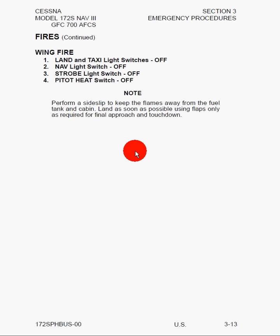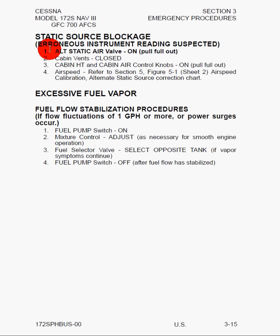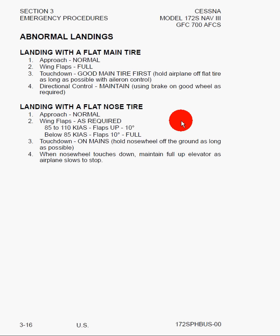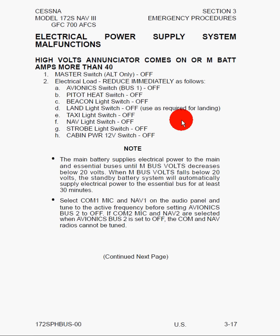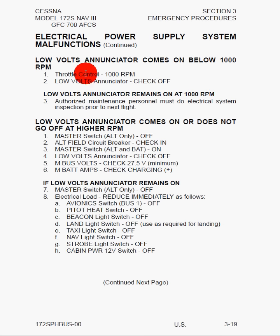Here we've got icing — and remember, we saw in sections 1 and 2 that knowingly flying into icing conditions is prohibited. We also have information on static source blockage, excessive fuel vapor, abnormal landings including landing with a flat main tire and with a flat nose tire, and electrical power supply system malfunctions. Topics covered include high voltage enunciator coming on, main battery amps more than 40, and low voltage enunciator.